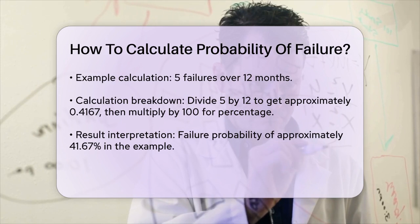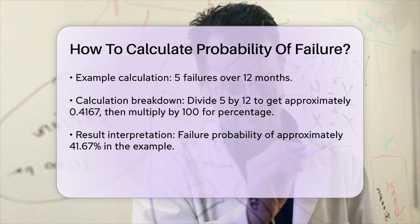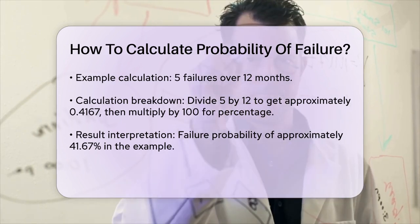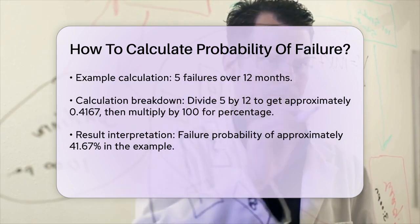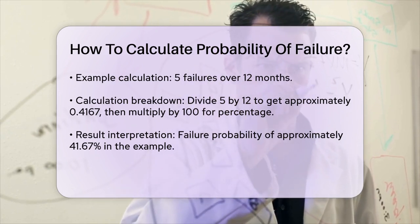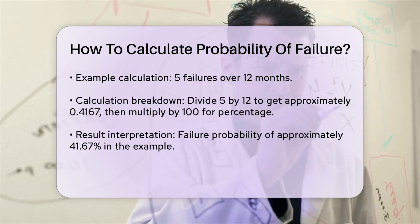So, in this example, the failure probability would be approximately 41.67%. This method is simple yet effective for giving you a clear picture of how likely it is for a system or component to fail within a given timeframe.